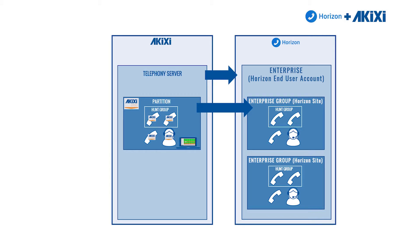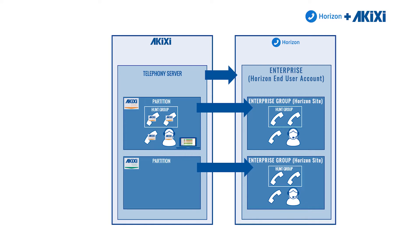In instances where there are multiple enterprise groups within the same enterprise, it's possible to set up multiple partitions to monitor each enterprise group. In this instance I'm going to apply an Akixi 1000 site license, connect the partition to the second enterprise group and synchronize. Because this is an Akixi 1000, it's not going to bring any information regarding ACD agents across.